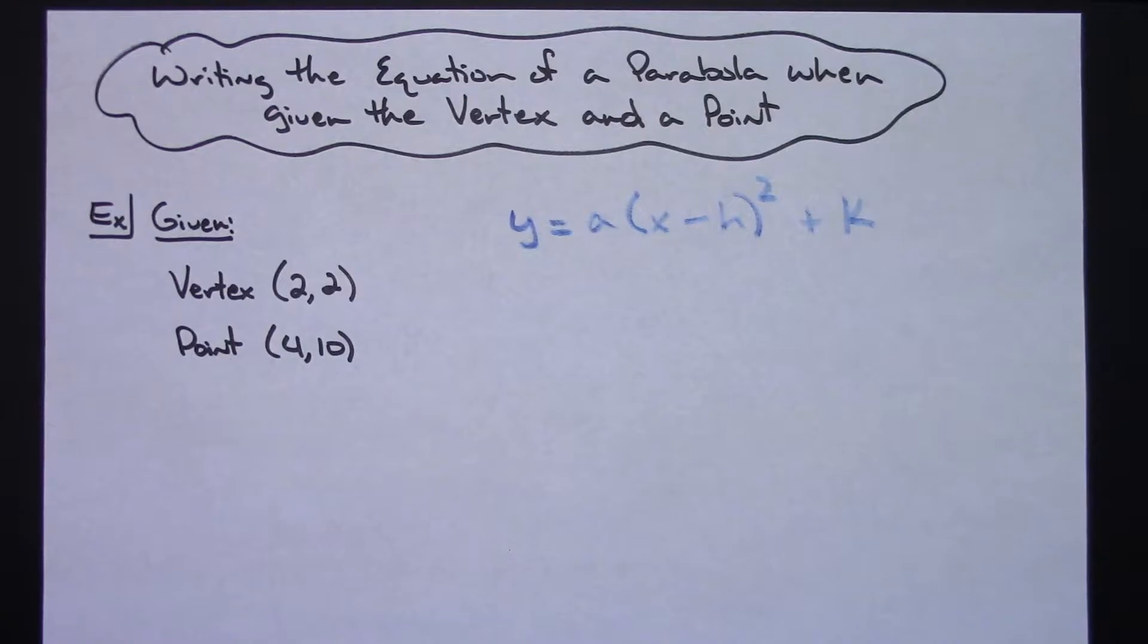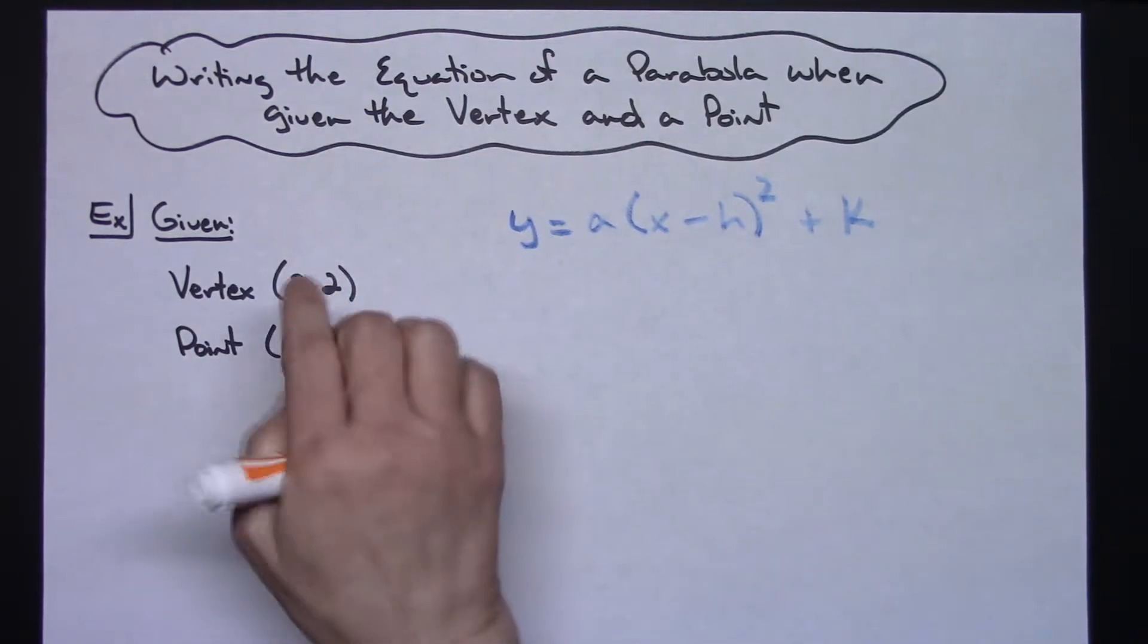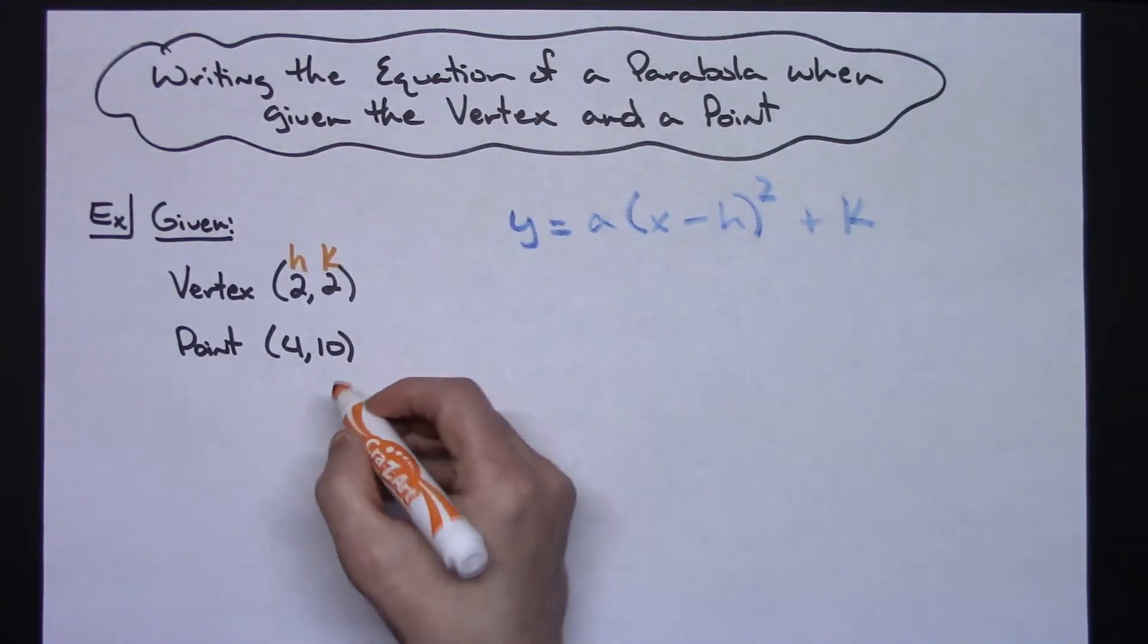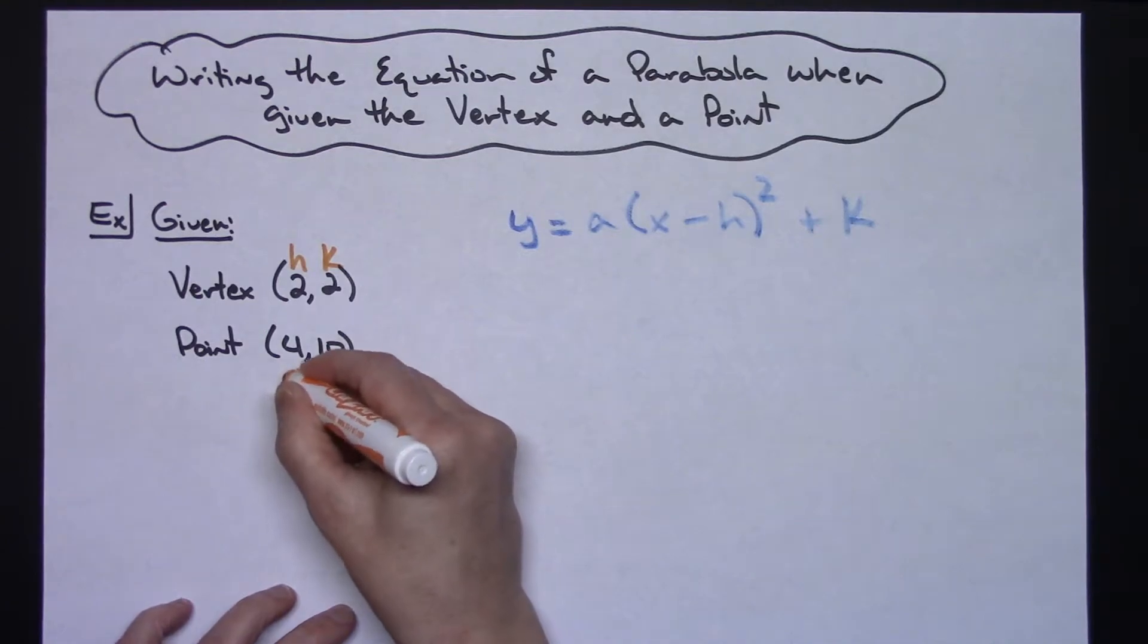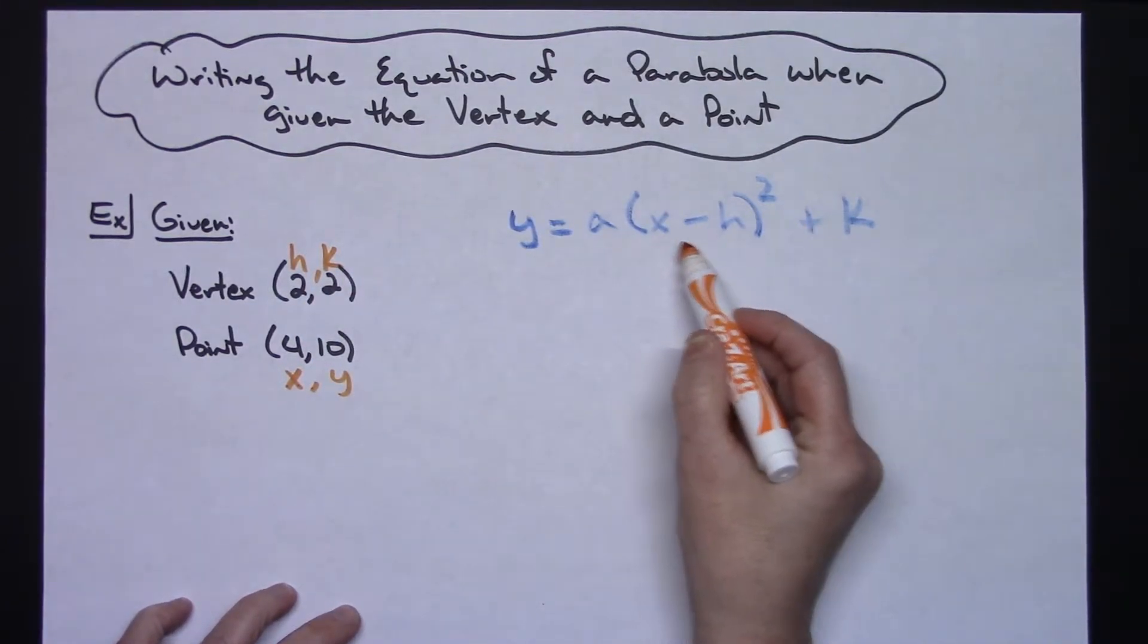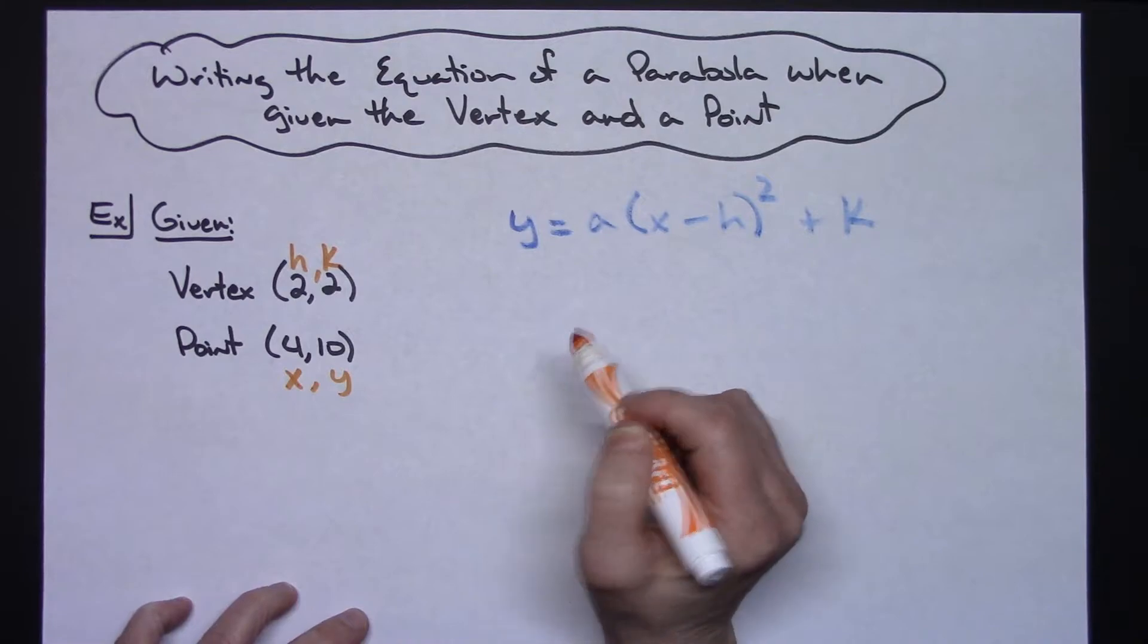From there I'm going to fill in everything I know and solve for this leading coefficient of a, because in my vertex, my vertex is h,k and this is a random point that is on the parabola so it's x and y. I know the y, the x, the h, and the k. The only variable that I don't know is that leading coefficient on that parabola which is the a.